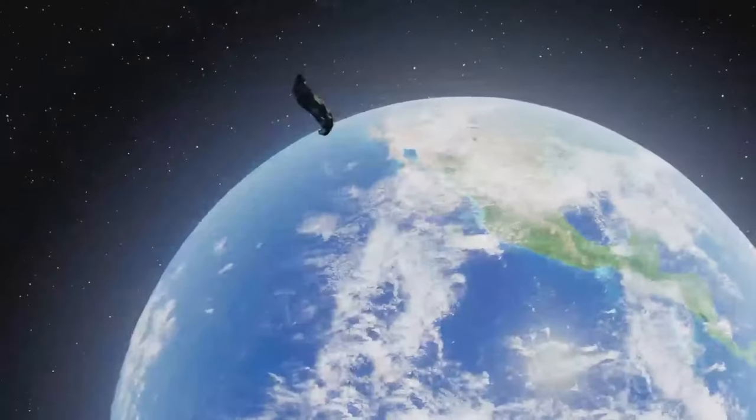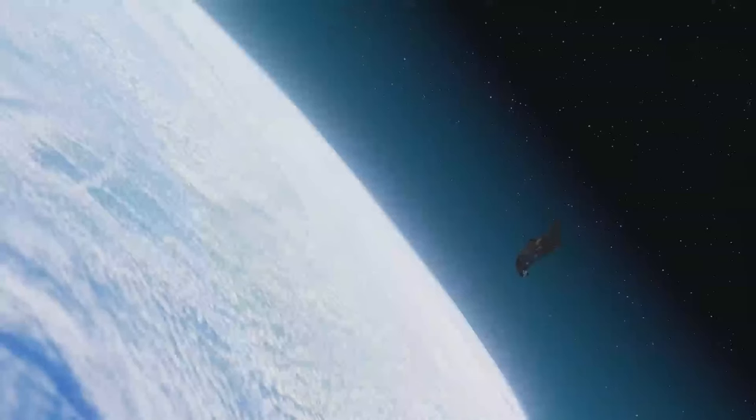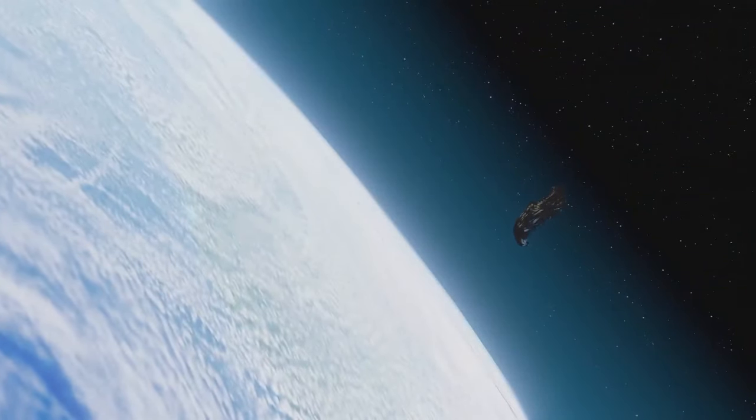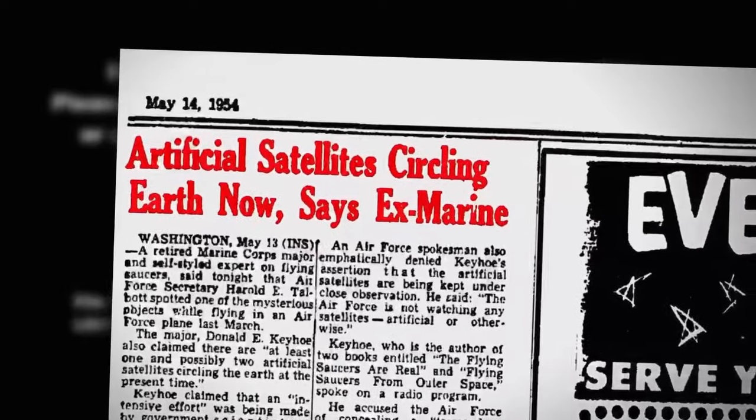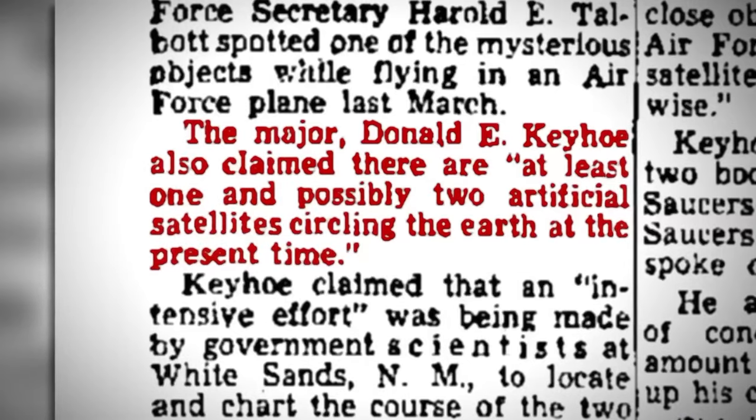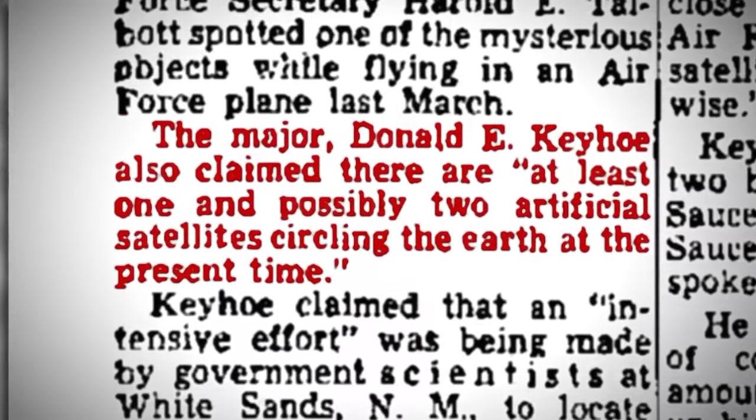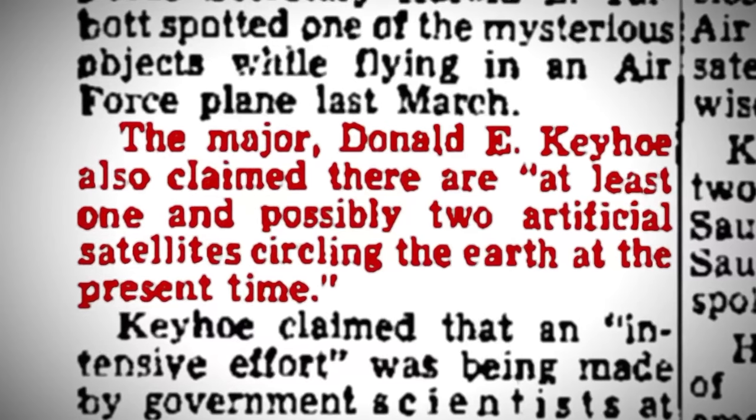The legend of the Black Knight satellite has captivated the world since the mid-20th century, evolving from scattered reports into a full-blown mystery that merges science fiction with tantalizing snippets of fact. The story began to take shape in the 1950s amid the Cold War and the dawn of the space age, when newspapers reported the discovery of an unknown object orbiting Earth. This period was ripe for such a legend to flourish, as the world was already on edge with fears of unseen enemies and the race to conquer space.